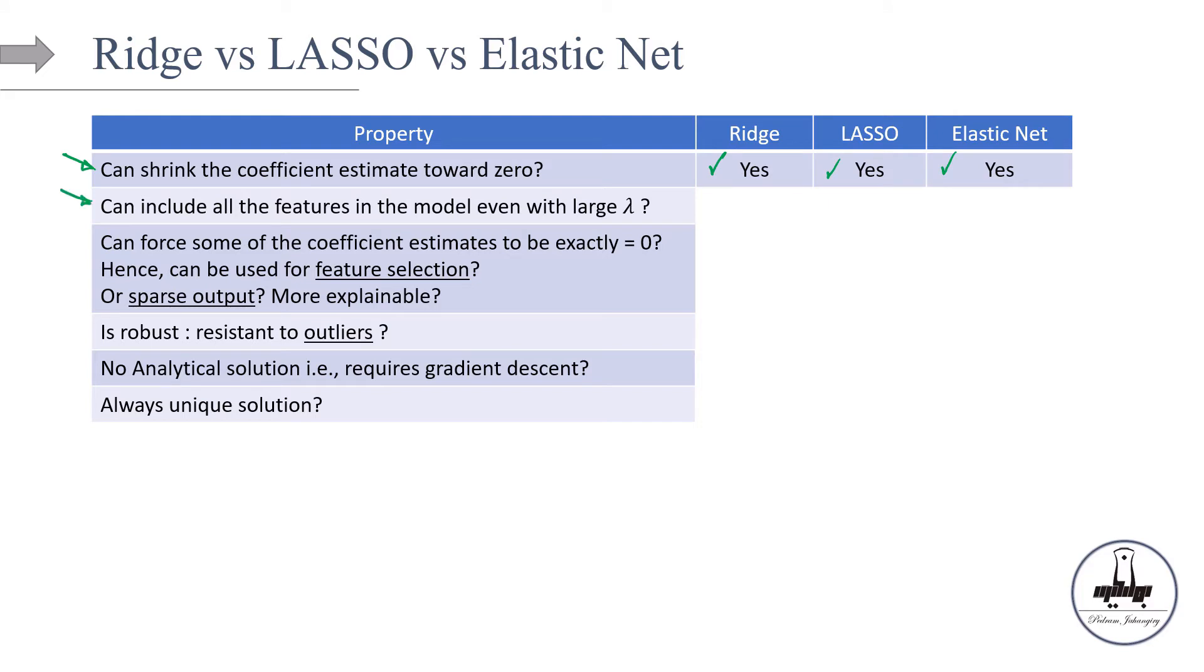Next one. This model can include all the features in the model, even with large lambda. So if lambda is large, we know that the penalty term is going to be - if the penalty term is large, then the algorithm is going to get rid of those features that are less useful. So here the question is that this model can include all the features in the model, even with large lambda. In another term, it's not going to set them exactly equal to zero. So yes, no, and no. Do you agree? There you go.